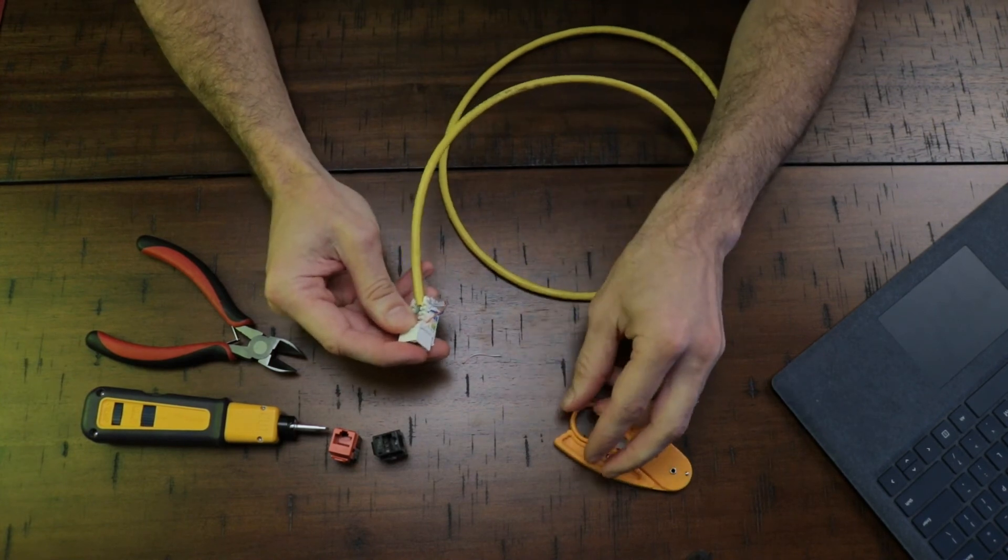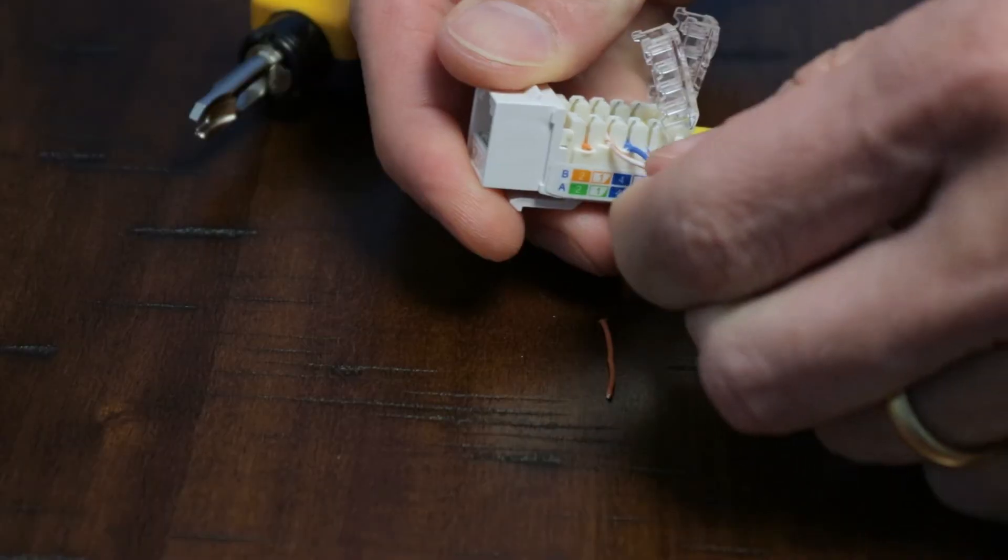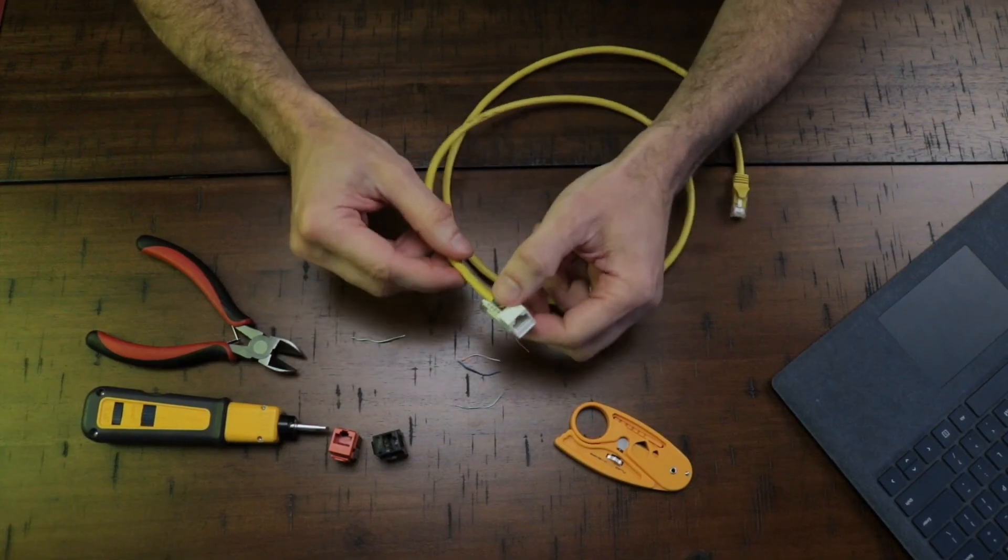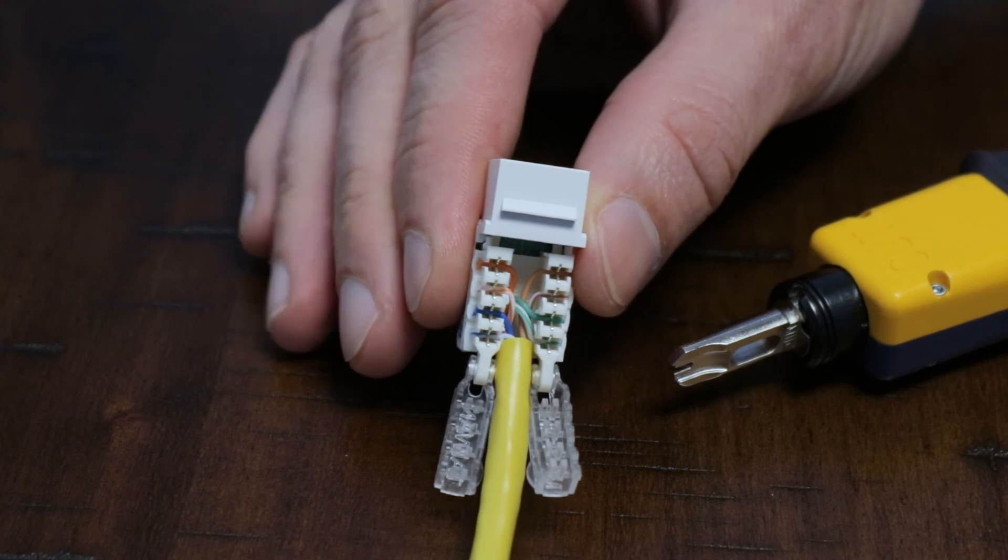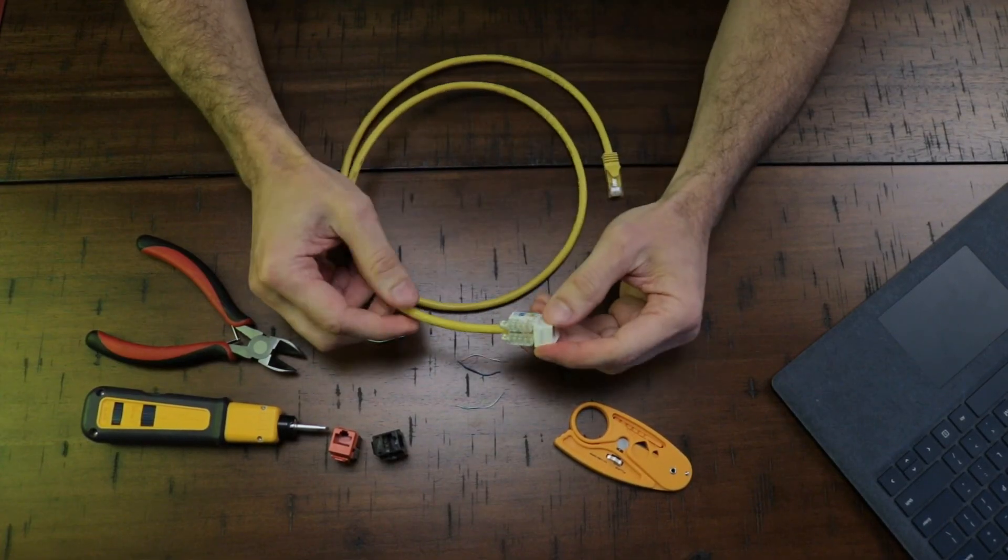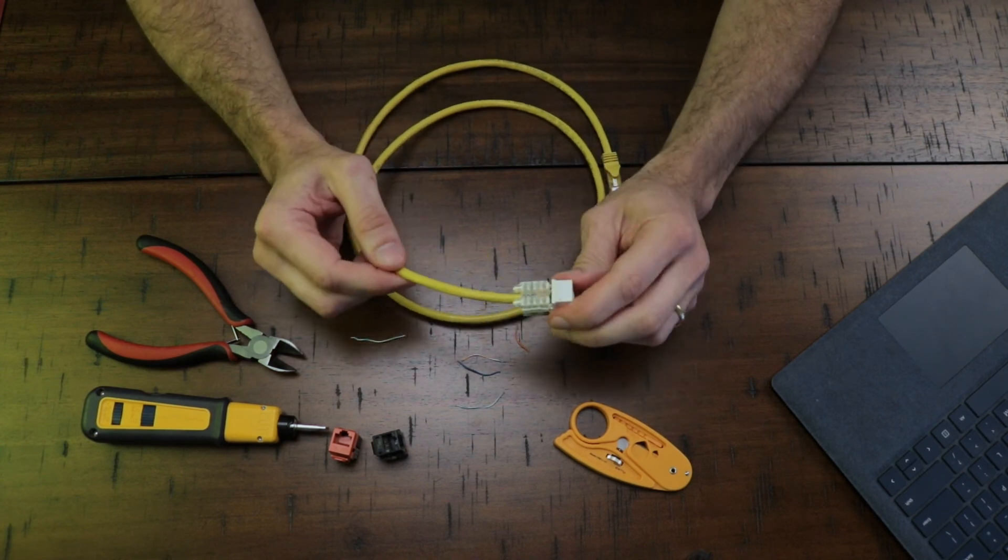Sometimes the blade will not cut the wires, but it's gonna be easy, like what I'm doing at the moment. So it's done. All you have to do is just put the cover on top, and there it is, the keystone termination is completed.